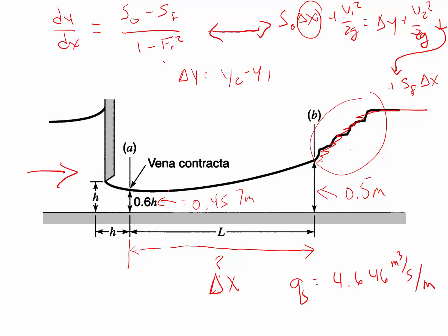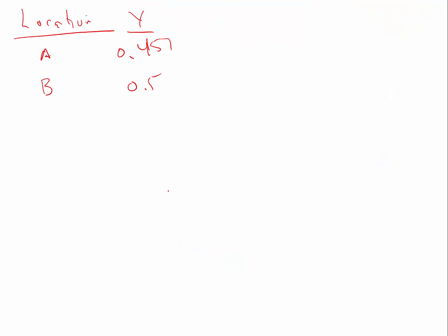Which would have a flow rate of 4.646 meter cube per second in that 1 meter of flow width. So as we look at this, we can say that the hydraulic radius is going to be simply equal to y in this particular problem, and that's 0.457 and 0.5.